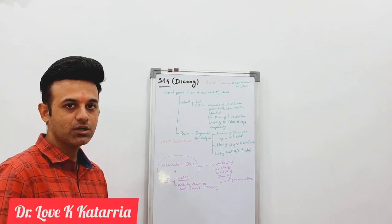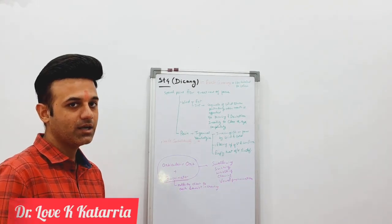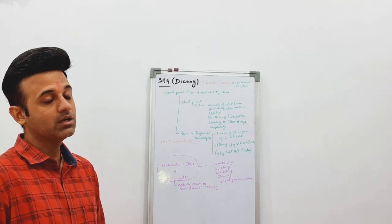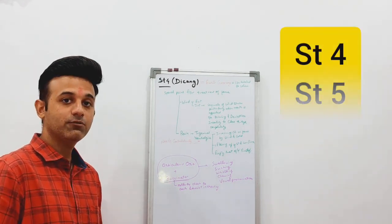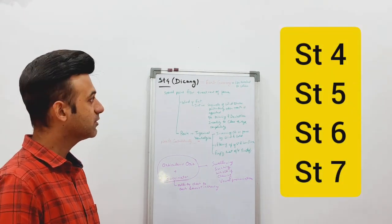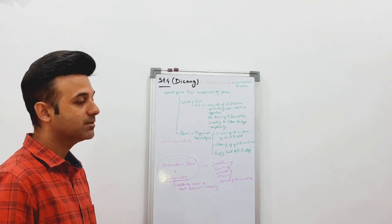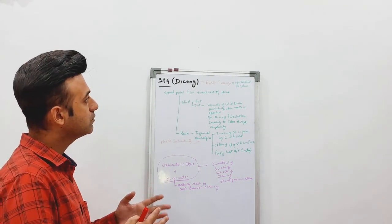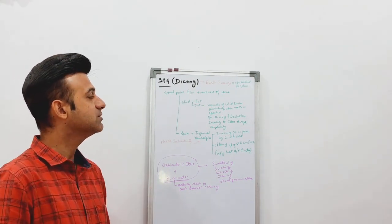Hello everyone, myself Dr. Love Ke Katariya and today we will be talking about Stomach 4, 5, 6 and 7 points. So let's quickly have a look at Stomach 4. Now this point is known as Daikan in Chinese.